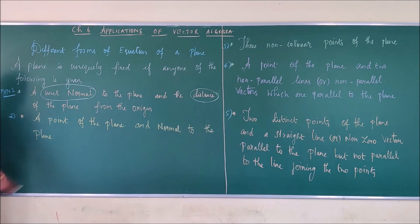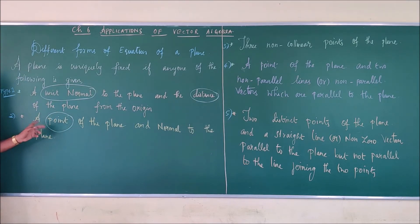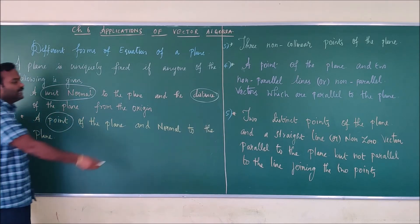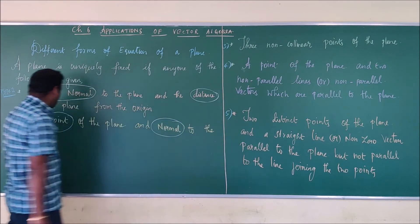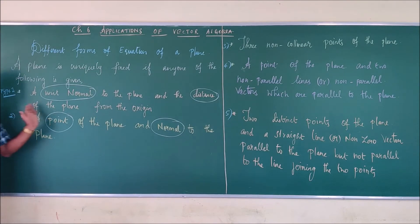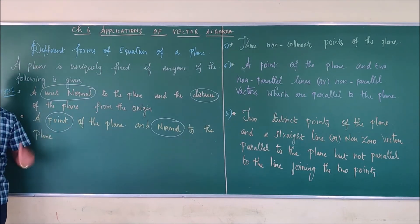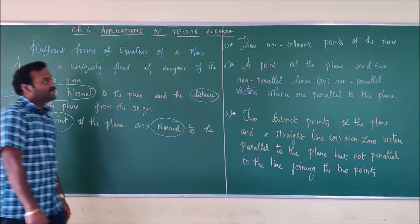Second type: a point of the plane is given along with the normal to the plane. This is the identification for the second type.